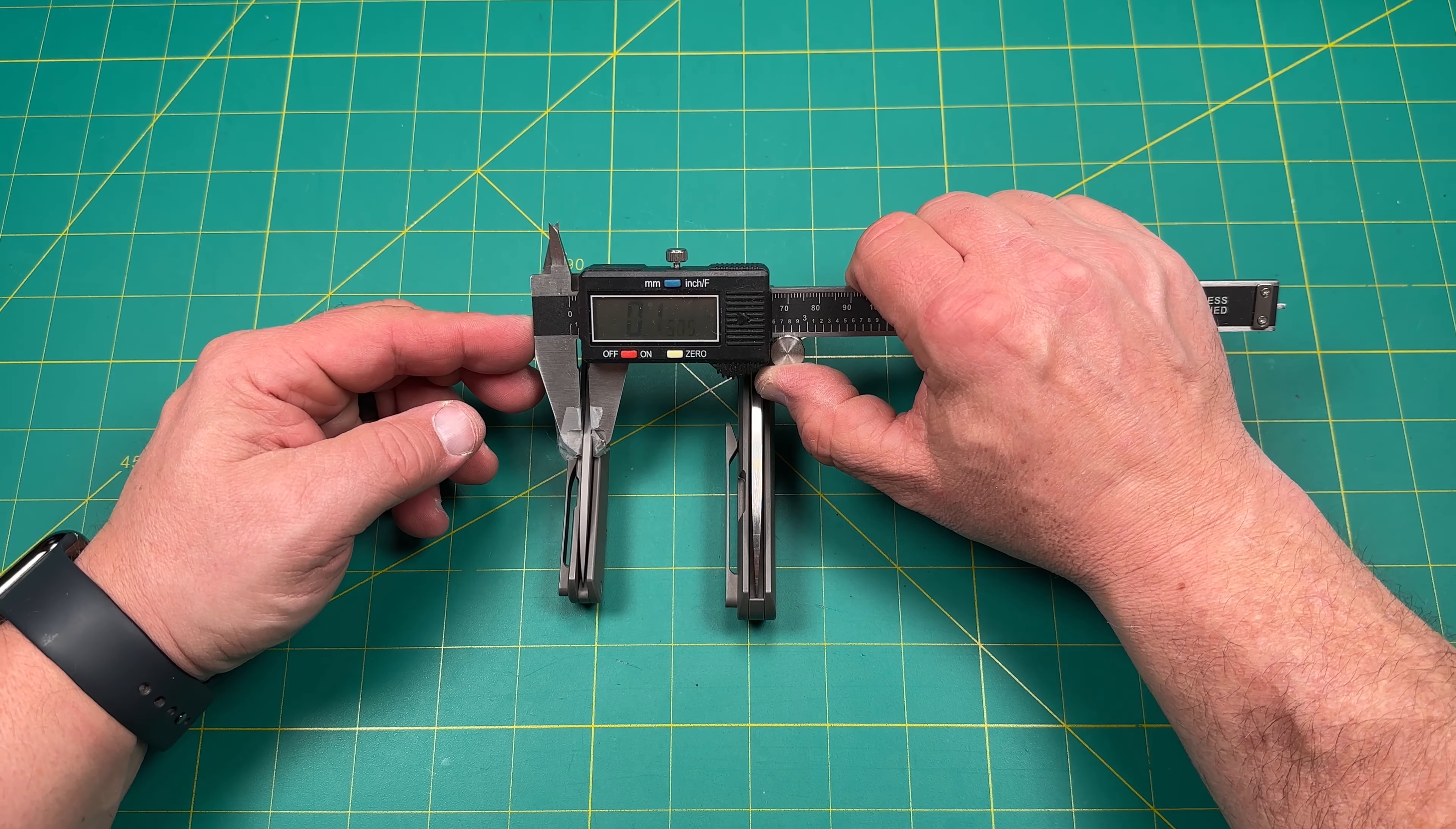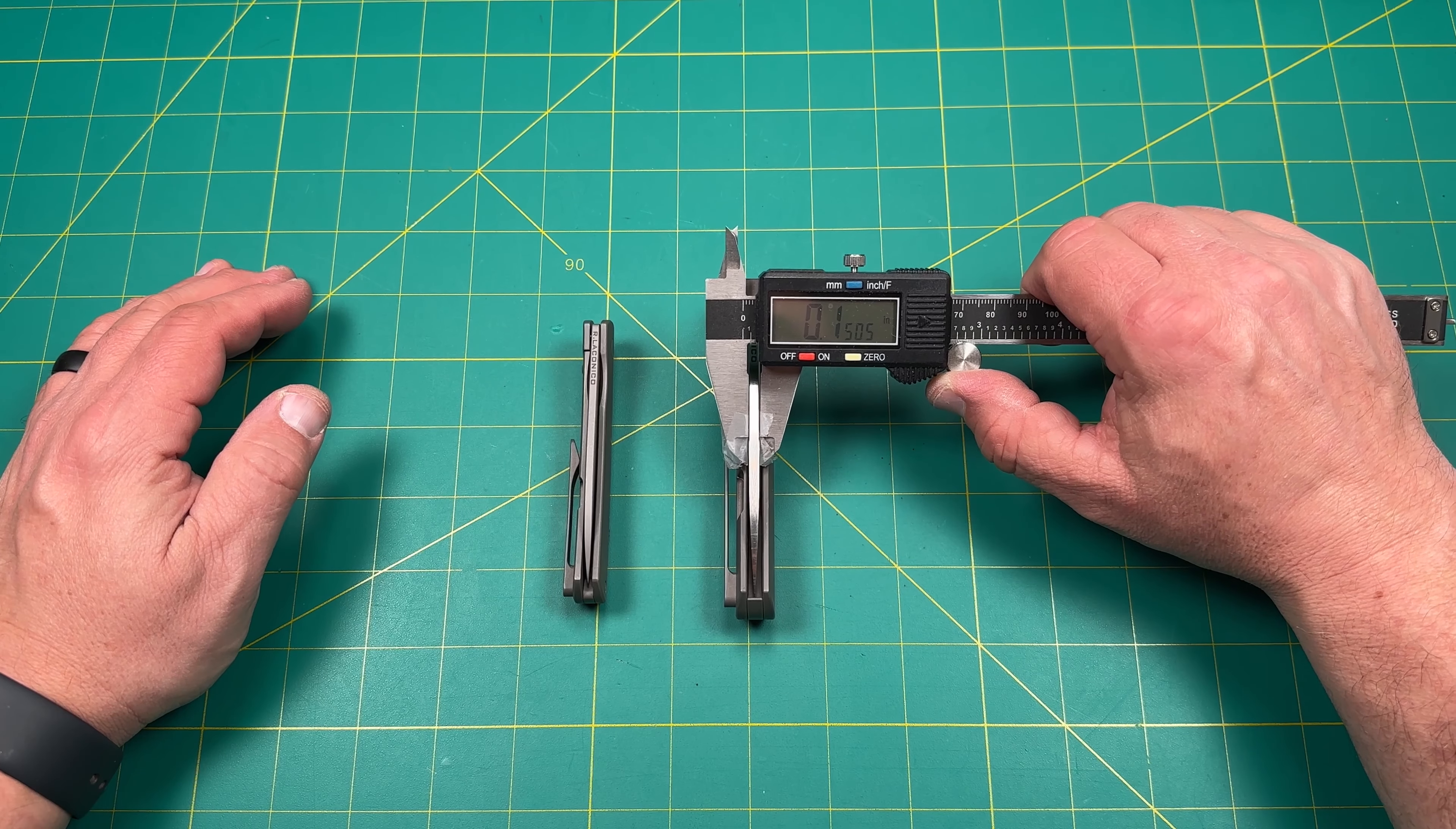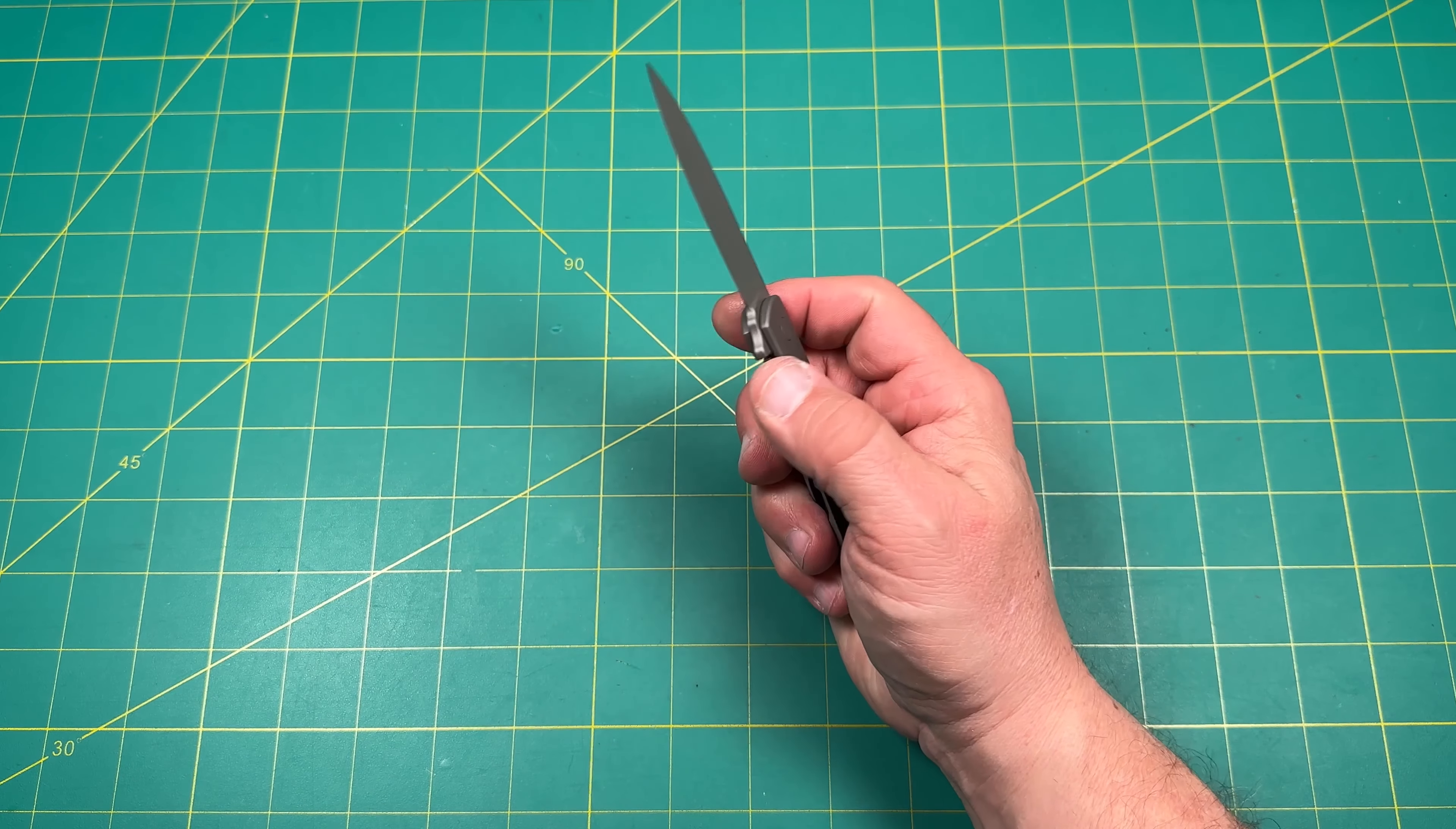All right, so the Mini Keen's blade stock thickness is 120 thousandths of an inch, so 0.12, whereas the regular one was 150 thousandths of an inch, or 0.15. So this one's definitely bigger, definitely more robust, but still this works really, really well.